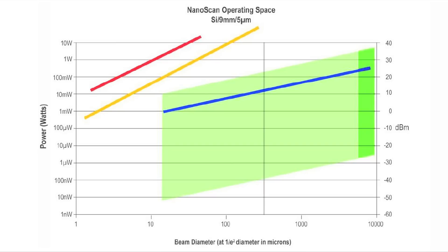For instance, if you have a 500 micron beam width, a 10 microwatt input power will be right in the center region of the operating space of the silicon 9.5 nanoscan.